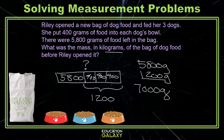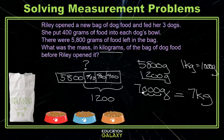We would be done except the answer is needed in kilograms. One kilogram equals 1,000 grams, and to move from a smaller unit like grams to a larger unit like kilograms, we divide. So we're dividing 7,000 grams by 1,000. The easiest way is to move the decimal point three places to the left, giving us 7 kilograms. And that's your answer — now you can go try some measurement problems on your own!